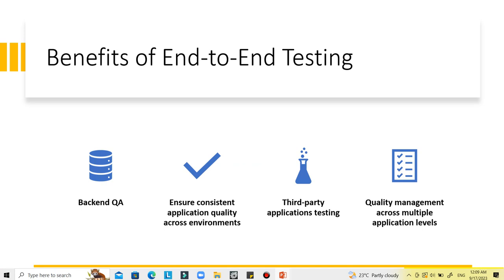The benefits of end-to-end testing include: first, backend QA — end-to-end testing verifies the backend layers, especially the database, which feeds critical information to other layers for the application to work. Second, it ensures consistent application quality across environments by verifying the frontend across a wide range of browsers, devices, and platforms. Cross-browser testing is frequently performed for this purpose.